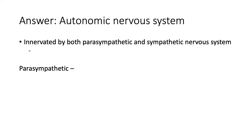Parasympathetically, the heart is innervated via the vagus nerve. The vagus nerve supplies the atrium but not the ventricles, so it affects the SA and AV nodes. The sympathetic nervous system innervates via the cardiac nerve, which goes to both the atria and the ventricles, also affecting the SA and AV nodes.